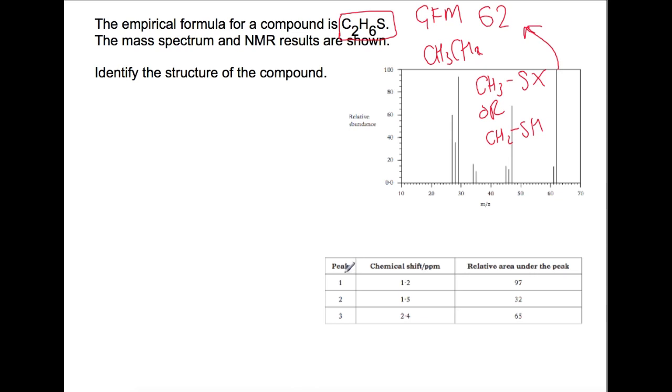If we then have a look at the chemical shifts that we have. At 1.2 that is usually a CH3 group. 1.5 we don't have anything definitive that would fit for our compound but then at 2.4 we have CH2 usually attached to something slightly more reactive. If we have a look at the area under the peak this is in roughly a 3 to 1 to 2 ratio which matches up with the mass spec data that we have where we have a CH3, a CH2 and then SH being the 1. So that would imply that our 1.5 on the NMR is going to be an SH peak.